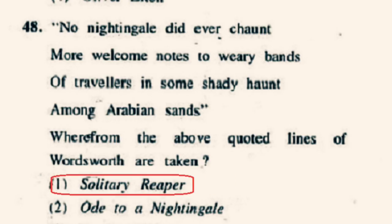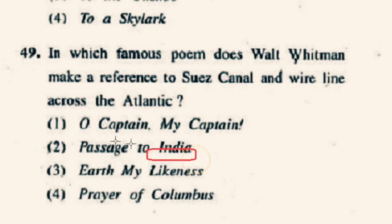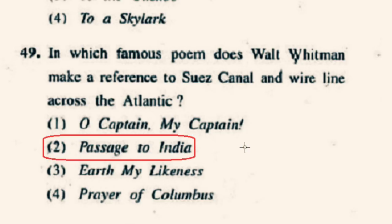Question number 49: In which famous poem does Walt Whitman make a reference to the Suez Canal and wire line across the Atlantic? The poem is Passage to India. It was originally published in 1870. So the right option will be 2nd option, Passage to India.